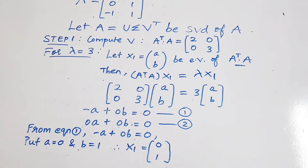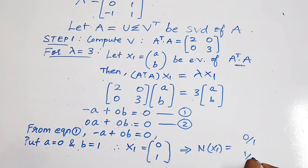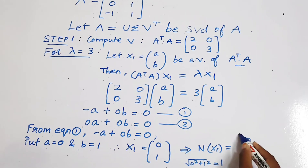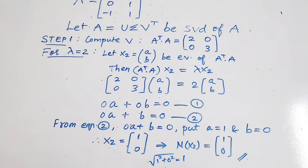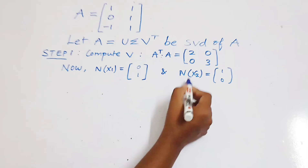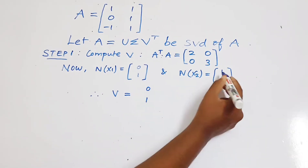Next we have to normalize this eigenvector, meaning divide each element by its length. The length is 1, so 0/1 and 1/1. The length is found as the square root of 0 squared plus 1 squared, which is 1. So the normalized eigenvector is [0, 1]. Similarly, the normalized eigenvector for lambda equals 2 is found. So our V matrix is [0, 1; 1, 0].